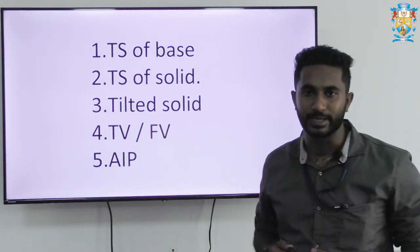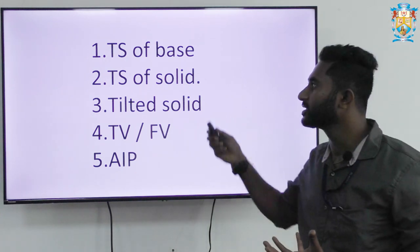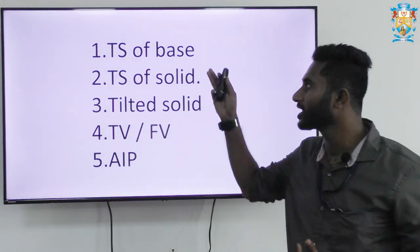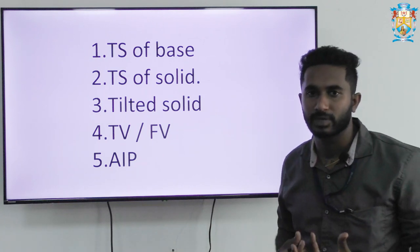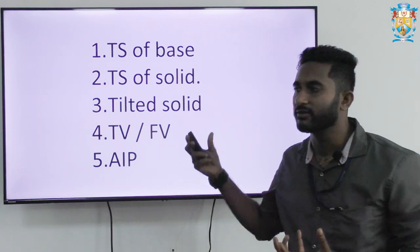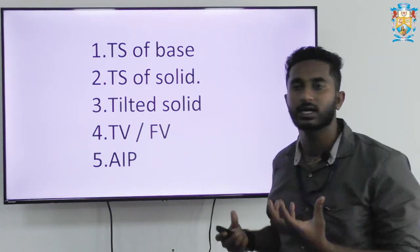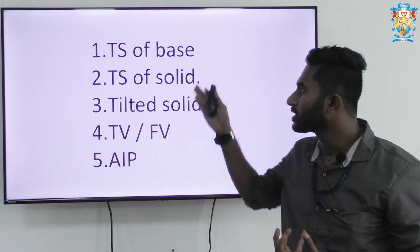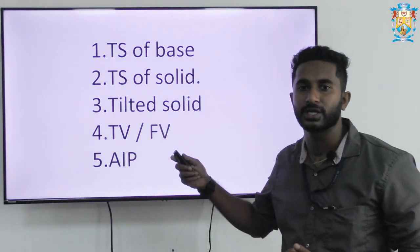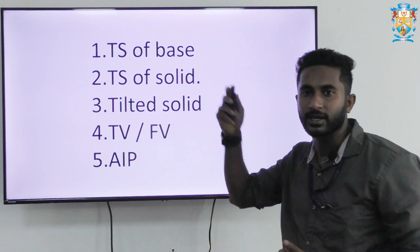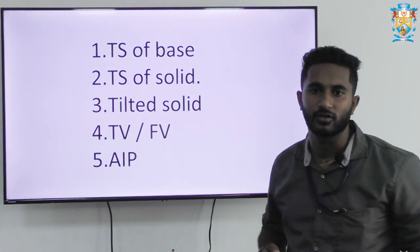These are the steps to be followed while solving any of the problems. The first thing is to know which type of base it is — the true shape of the base to be drawn. If it is a pyramid, which type of pyramid it is — maybe a square pyramid. If it is a square pyramid, the square base to be drawn; if it is a pentagonal pyramid, the pentagonal base to be drawn. After you draw the base, the next step is to draw the true shape of the solid, where you look at the height of the solid and then draw its true shape.